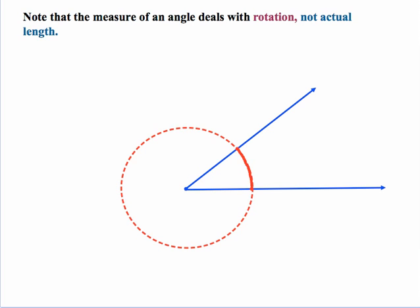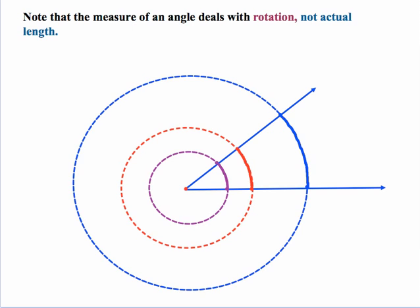Also the measure of an angle deals with rotation not the actual length of the arc. So notice here we have this arc. Here's another circle and then here's a third circle. Notice that the whole time the angle never changed. Now the lengths of these arcs did because of the size of the circles. But again we're dealing with rotation. So again very important that the kids see the distinction that the length of the arc is not the measure. It's the rotation around the circle is what the degree measure is.